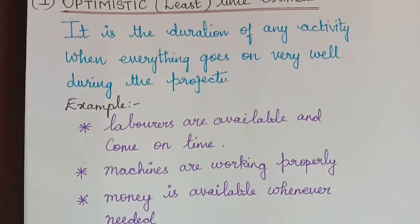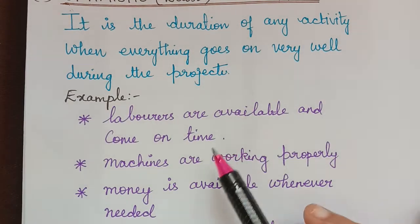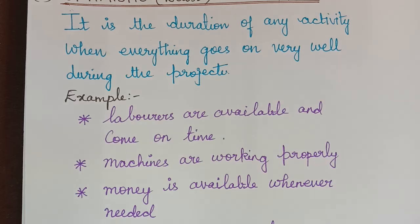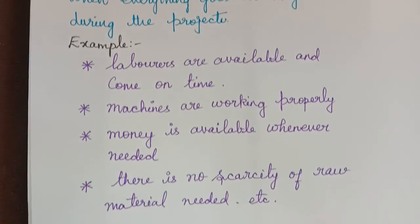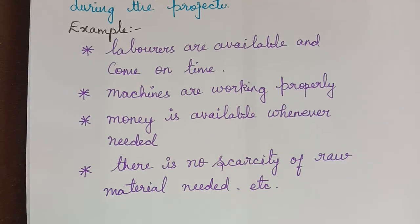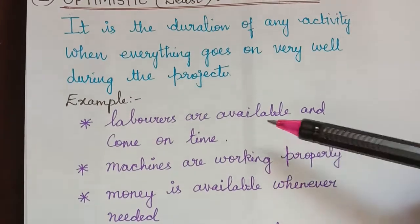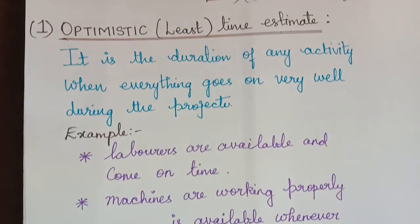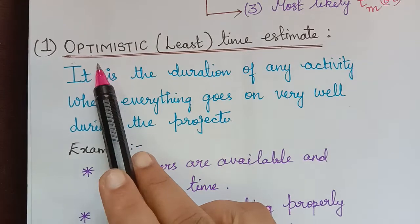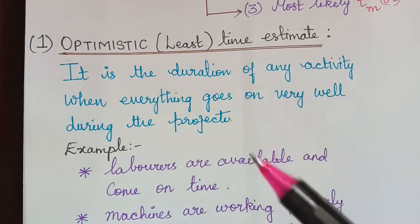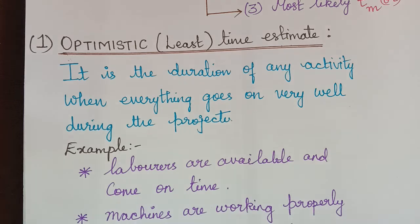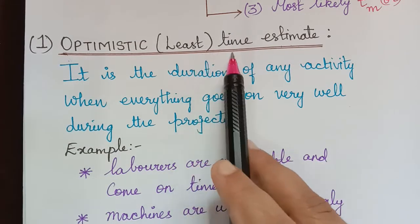For example, the laborers are available and come on time, so the project will move on smoothly. When the machines are working properly, money is available whenever needed, and there is no scarcity of raw materials, there is no problem in the project and everything goes on very well. Because of that it is known as optimistic time estimate — the time taken to complete the project becomes least since everything goes on smoothly.